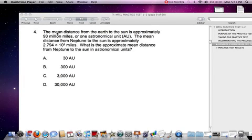Number 4. The mean distance from the Earth to the Sun is approximately 93 million miles, or one astronomical unit. The mean, or average, distance from Neptune to the Sun is approximately 2.79 times 10 to the 9th miles.